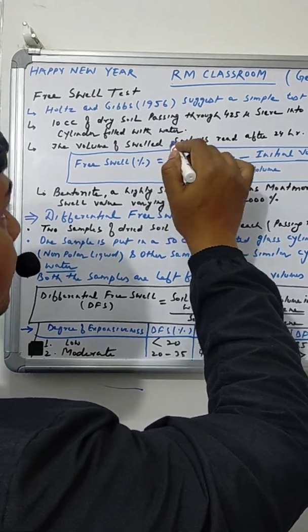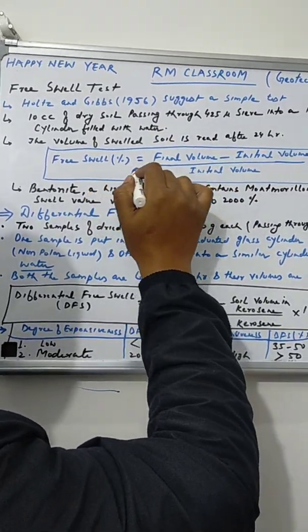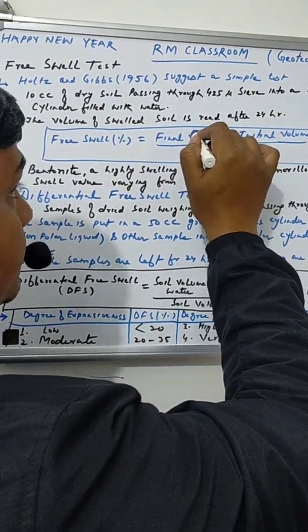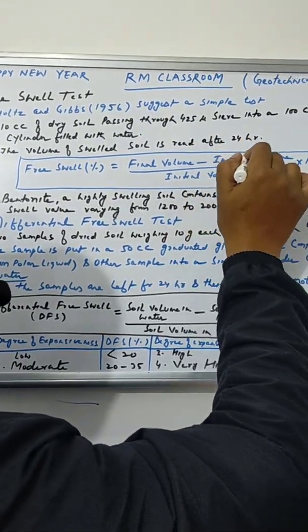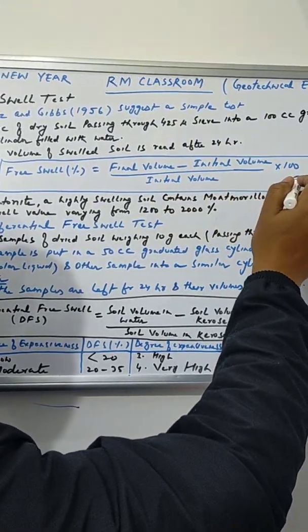Free swell value can be computed by the difference between final volume in the cylinder minus initial volume divided by initial volume into 100.